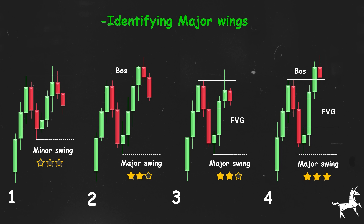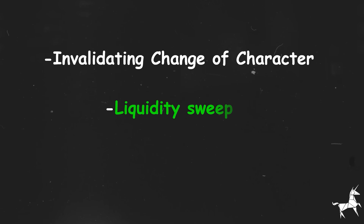Breaking below this low signifies a valid change of character, a complete shift in market direction and momentum. So far we have discussed how to identify major swings and valid changes of character. I would like to add that there are two exceptional scenarios that make a change of character invalid. These two scenarios are the liquidity sweep and fair value gap mitigation concepts.